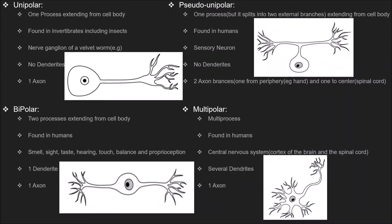Let us see some differences between these neurons. The first one is number of processes. In a unipolar neuron, one process extends from the cell body. In a pseudo-unipolar neuron, one process extends from the cell body but it gets split into two different external branches. In a bipolar neuron, you have two processes extending from the cell body. And in a multipolar neuron, you have multiple processes.